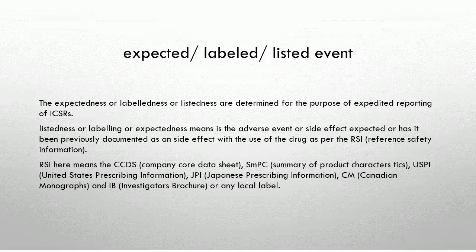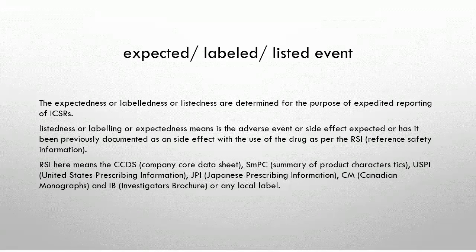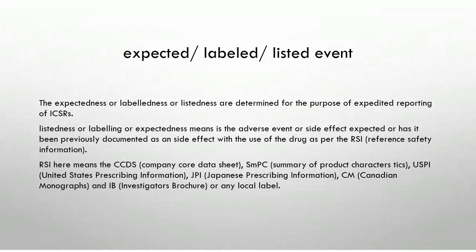What is an expected, labelled, or listed event? Expectedness, labelledness, or listedness are determined for the purpose of expedited reporting of ICSRs. It means: has the adverse event or side effect been previously documented with use of the drug as per the Reference Safety Information, RSI? RSI includes the CCDS (Company Core Data Sheet), SMPC (Summary of Product Characteristics), USPI (United States Prescribing Information), CHP (Japanese Prescribing Information), CM (Canadian Monographs), IB (Investigator's Brochure), or any local label.